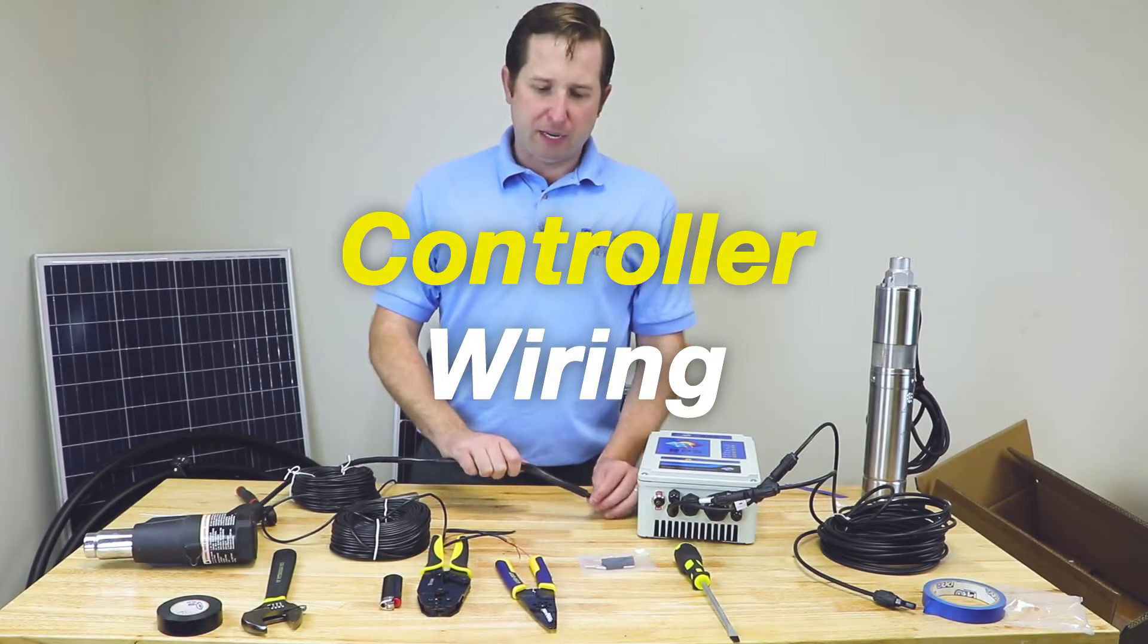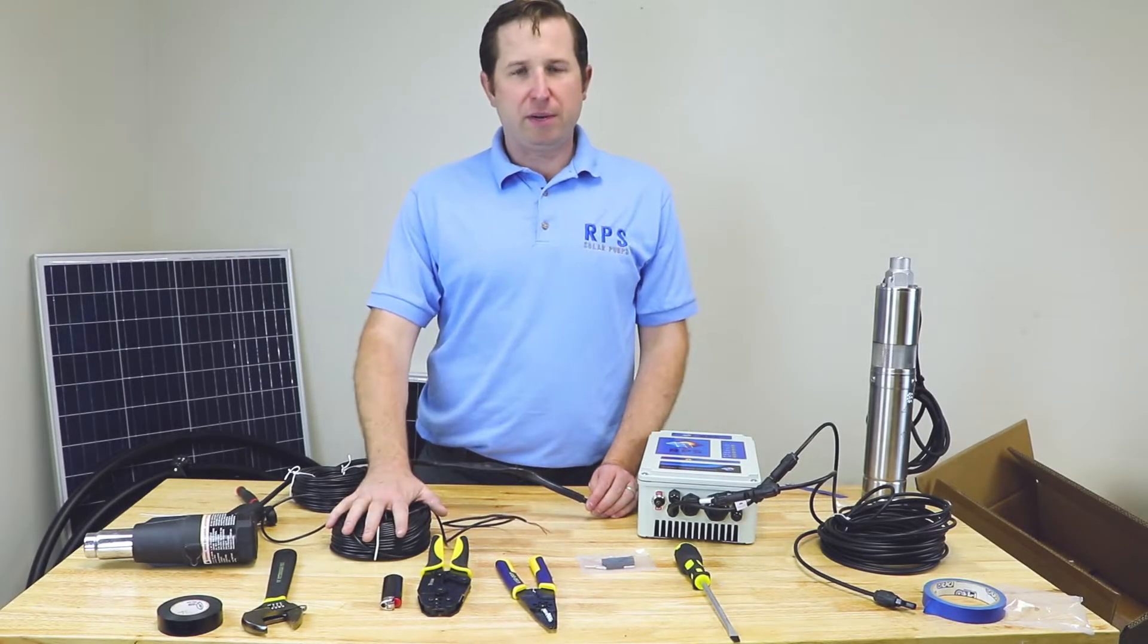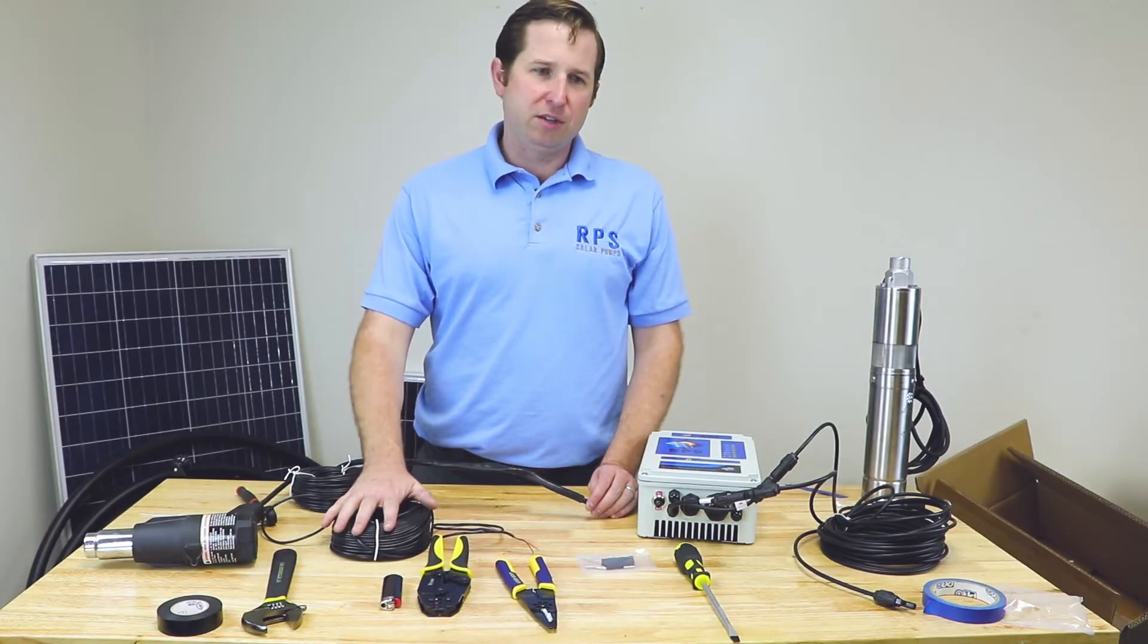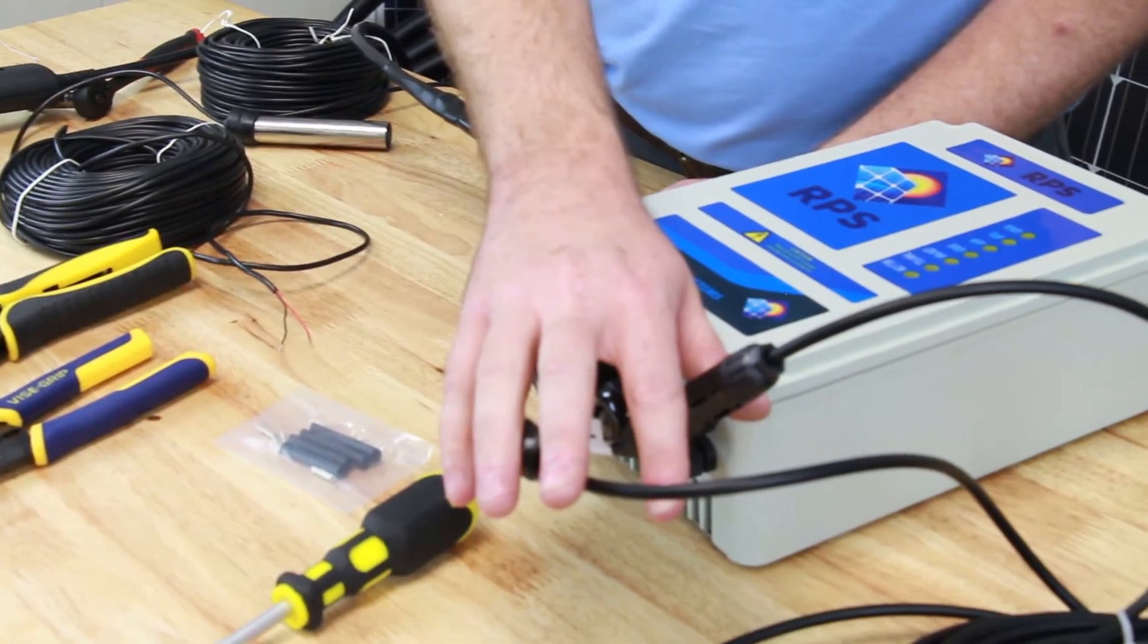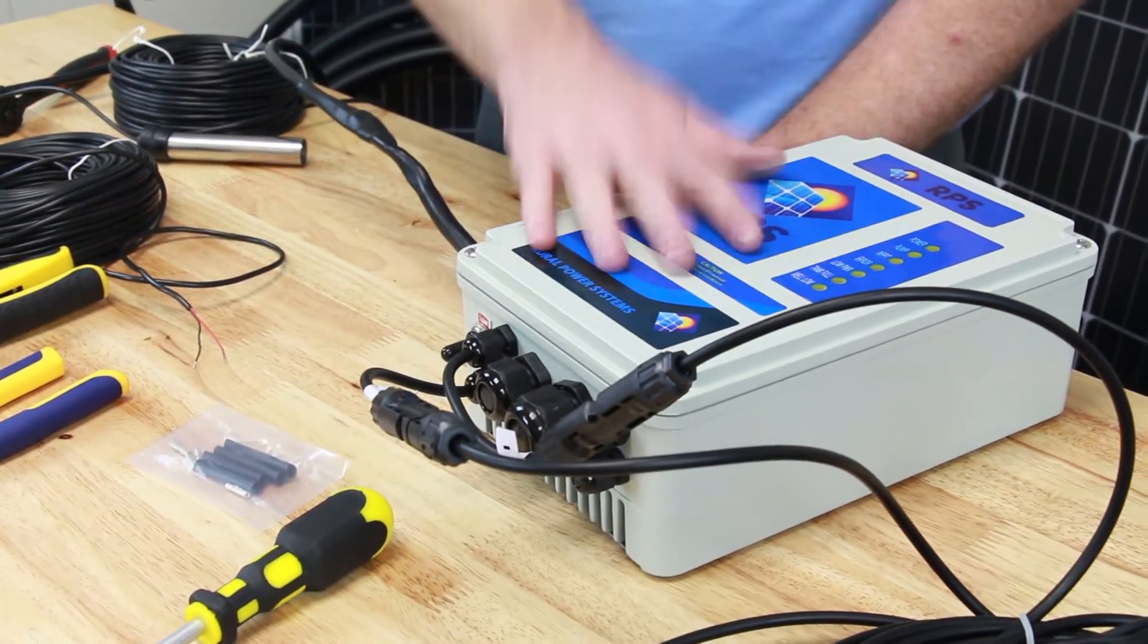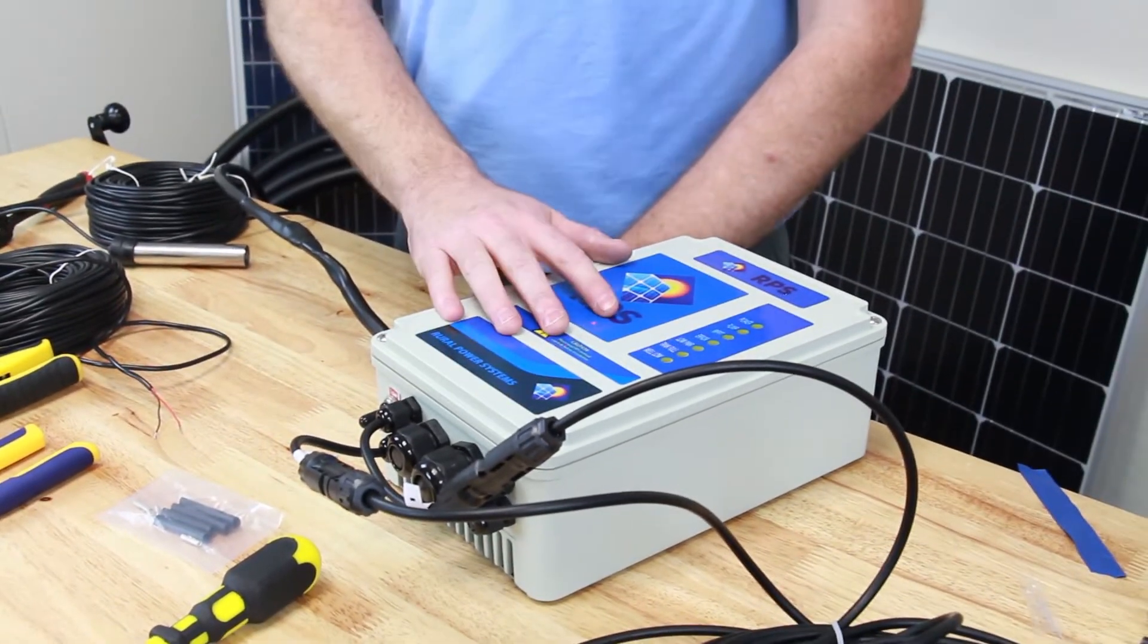We have our pump wire spliced, we have our sensors hooked up in our tank, and we have our other sensor attached to the top of our pump. We have our solar panels hooked up to our controller and now we're ready to make the final connections into the controller and get this system operating.